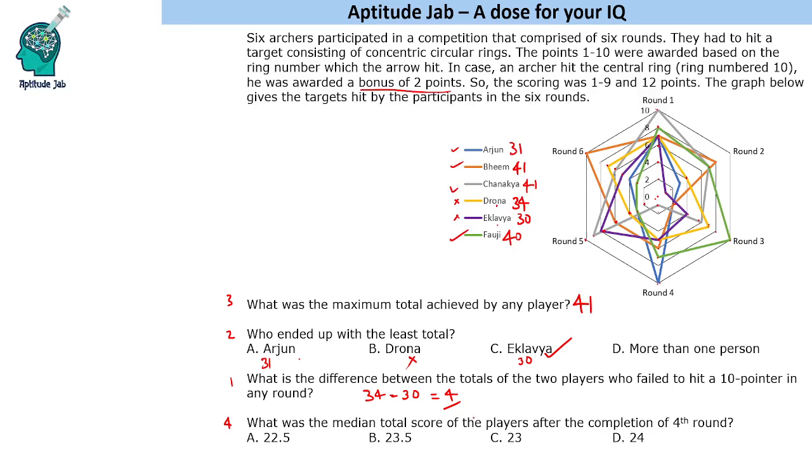Now we have to find the median total of all the players after the completion of 4th round. This was the highest total. Now we will have to find for just 4 rounds. If we see Arjun, we will have to redo this thing. One thing you should have done is written these values. You just add up to 4 rounds. I am doing in my head, so it will take time for me. But if you write, then you could have done it better.